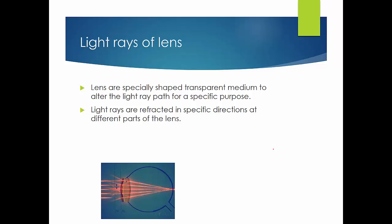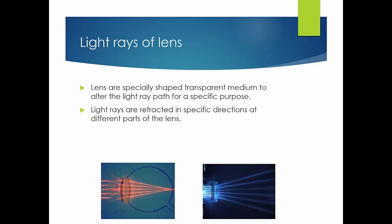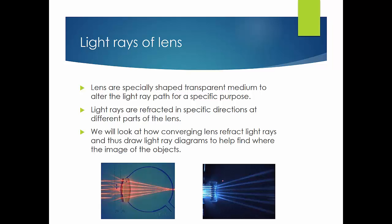You find that there are light rays that converge to a particular point, as in the lens of the eye, or it could be diverging where parallel light rays scatter out. The glass or transparent medium is specially shaped to alter the light ray in a certain manner. For this lesson, we will look at how a converging lens refracts light rays and how to draw the light ray diagram to locate the image of an object.